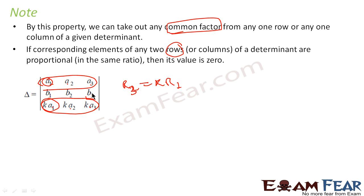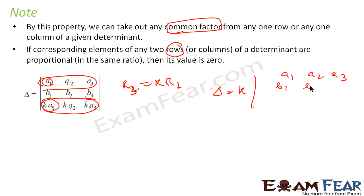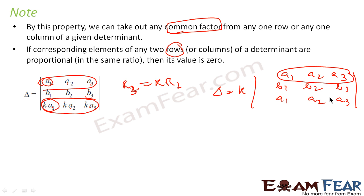Here is how: using the first part of this property, we can take k out from row 3, since all its elements have k. Row 1 and row 2 remain unchanged. After dividing row 3 by k, we get a1, a2, a3 — which is identical to row 1. Since two rows are identical, the determinant is zero.